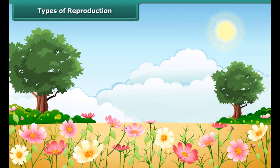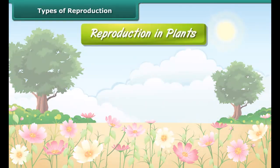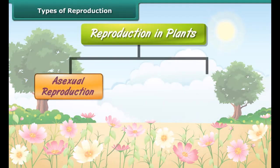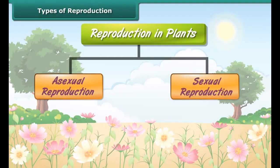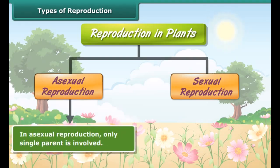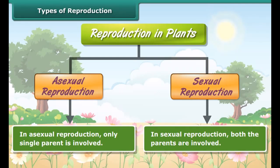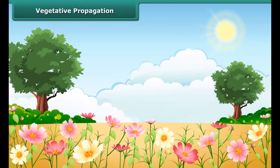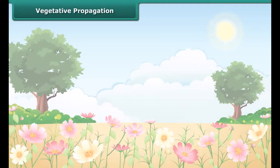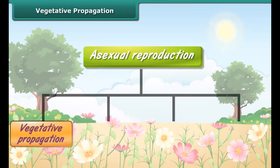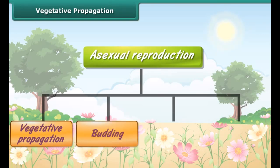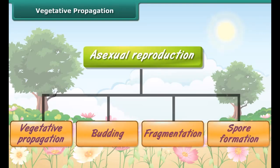Types of reproduction. Reproduction in plants can be achieved through two ways: asexual reproduction and sexual reproduction. In asexual reproduction, only a single parent is involved, whereas in sexual reproduction both parents are involved. Different methods of asexual reproduction are vegetative propagation, budding, fragmentation, and spore formation.